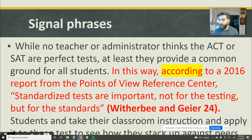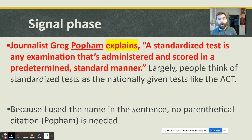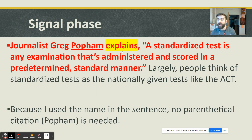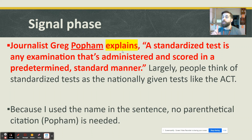You don't want to just say 'according to a report, standardized tests are important' — what report? Where is this coming from? When was it written? Here's another example: 'Journalist Greg Popham explains standardized tests are blank.' Notice I don't have a parenthetical at the end because I've already used the author's name. Also notice the verb — we're going to use strong verbs when signaling information from another source. Avoid verbs like 'tells,' 'says,' or 'is,' and focus on active reporting verbs like 'explains,' 'qualifies,' 'argues,' 'observes,' or 'found.'